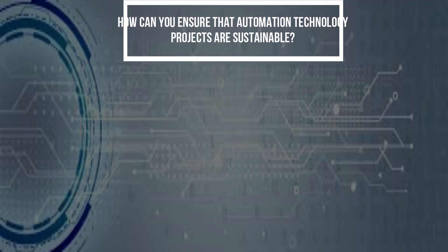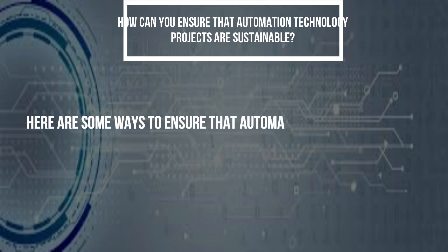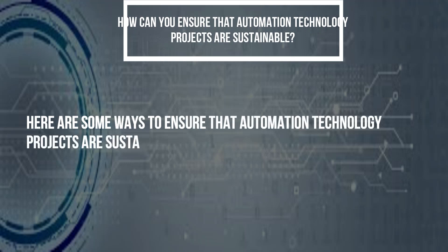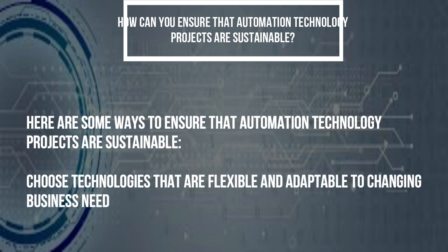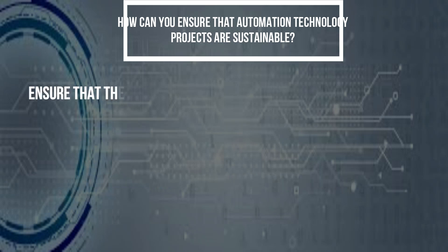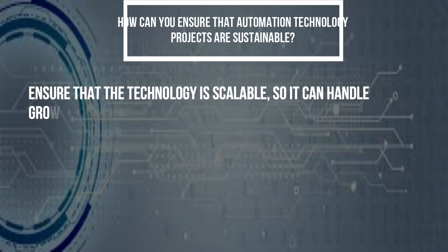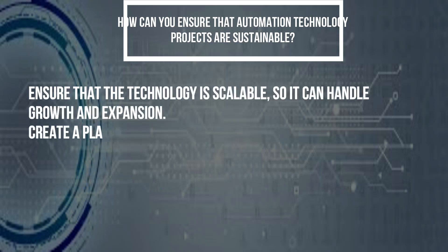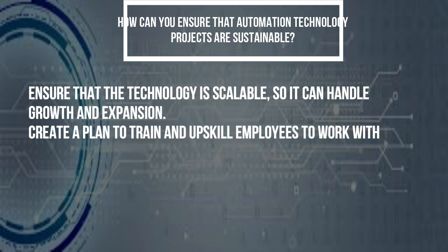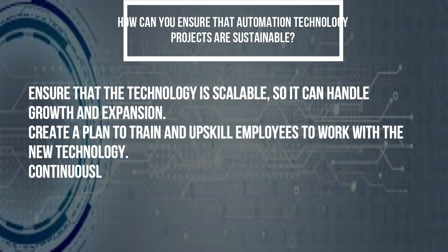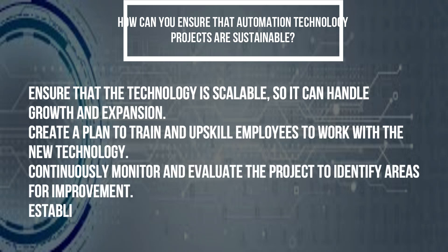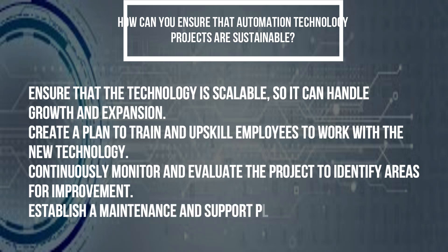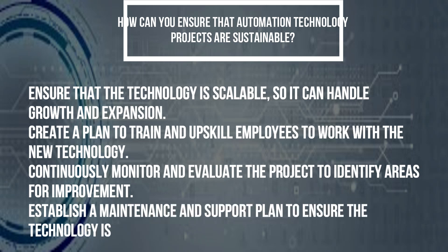How can you ensure that automation technology projects are sustainable? Choose technologies that are flexible and adaptable to changing business needs. Ensure that the technology is scalable so it can handle growth and expansion. Create a plan to train and upskill employees to work with the new technology. Continuously monitor and evaluate the project to identify areas for improvement. Establish a maintenance and support plan to ensure the technology is always working optimally.